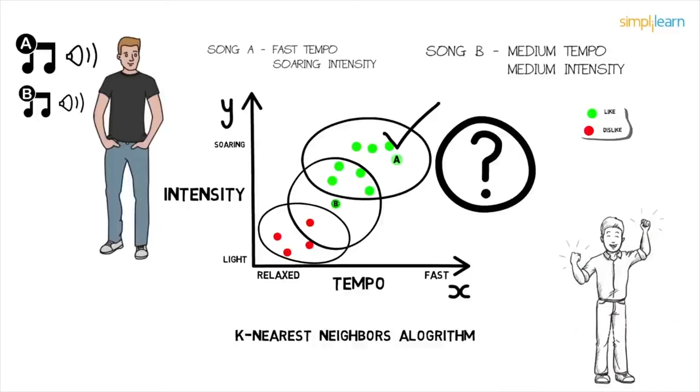But what happens when the choices become complicated, as in the case of Song B? That's when machine learning comes in. It learns the data, builds the prediction model, and when the new data point comes in, it can easily predict for it. More the data, better the model, higher will be the accuracy.